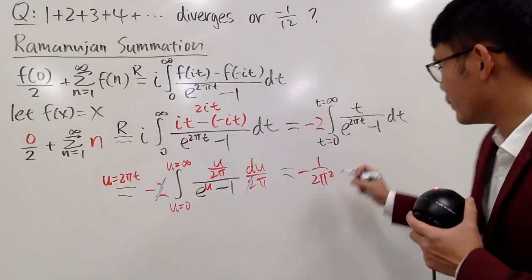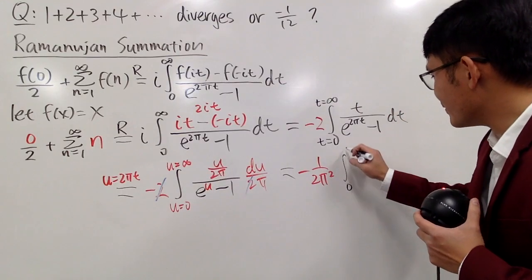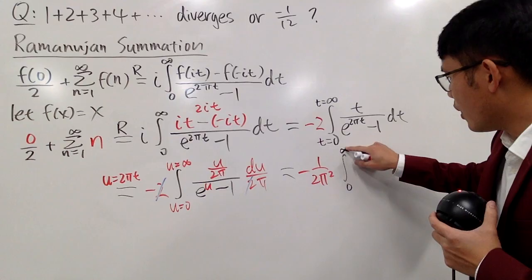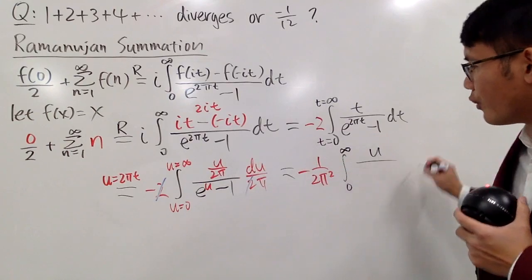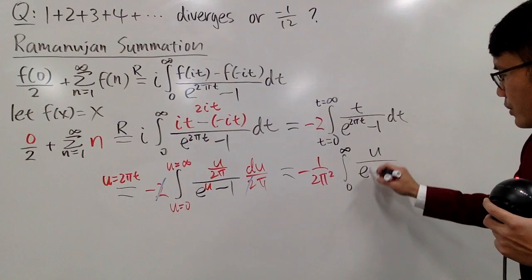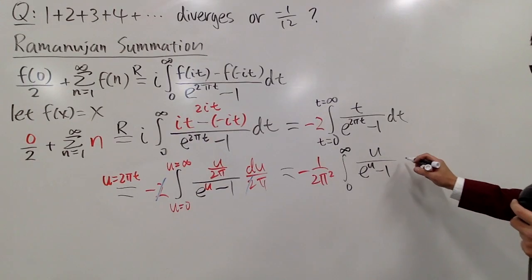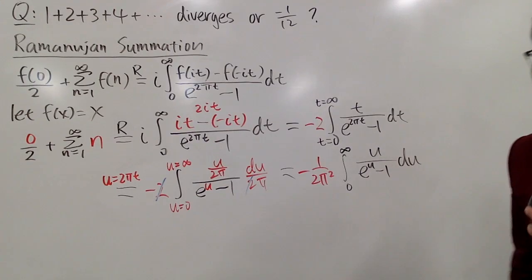And then for the rest, we have the integral from 0 to infinity. Everything is in the u world already. And on the top, I just have the u over, here we have e to the u, minus 1, and this is with du. Now, I'll write this down. We have negative 1 over 2 pi squared.